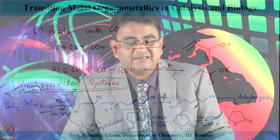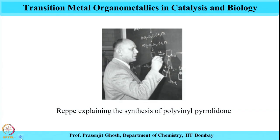This shows how a very complex molecule, also an important feedstock in the chemical industry, can be synthesized from acetylene using Reppe chemistry. This was one of the big outcomes of Reppe chemistry overall, and a patent came out of it. Here is a picture showing Reppe explaining the synthesis of polyvinylpyrrolidone on the board.